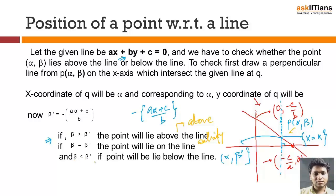If it is equal to 0, this point will satisfy on the line. And if this is less than, the point will lie below the line.